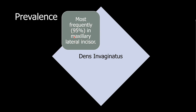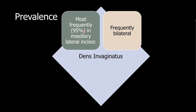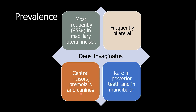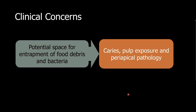The prevalence of dens in dente is mostly in the maxillary lateral incisor — about 95%. If you see one tooth with a dens in dente, most likely you will see another on the contralateral side. You may also see this on central incisors, premolars, and canines. Dens in dente is rare in the posterior teeth and also rare in the mandibular arch.